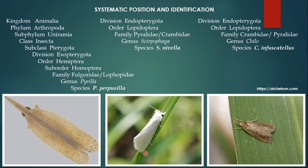First, I will talk about the systematic position. For Pyrella purpusilla, it belongs to phylum Arthropoda, subphylum Uniramia, class Insecta, subclass Pterygota, division Exopterygota, order Hemiptera, suborder Homoptera, family Fulgoridae or Lophopidae, genus Pyrella, and species Pyrella purpusilla.